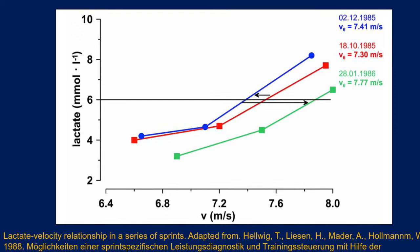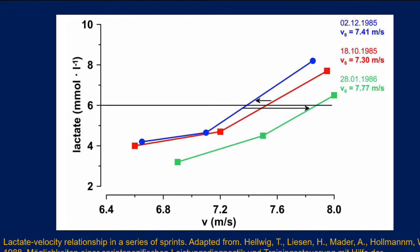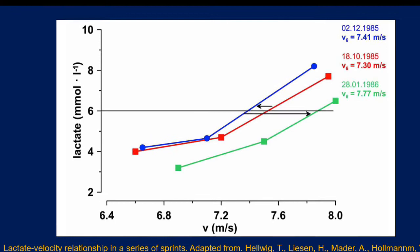Just focus on any one of those three colored lines. The important variable, according to this paper and this model, is that the a-lactic capacity can be estimated at a fixed blood lactate concentration of 6 millimoles. The black horizontal line shows a 6 millimole concentration, and for any given speed on any of those curves, we can identify what has been considered to be the a-lactic capacity.